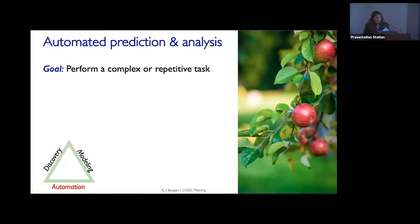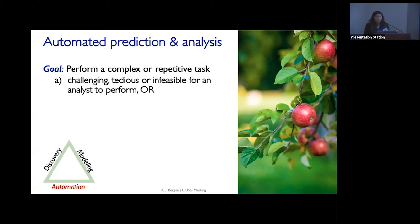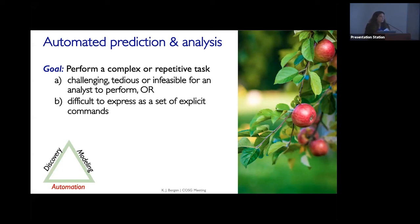The first mode is automation — automated prediction, decision making, or data analysis. The goal is to perform some sort of complex or repetitive task that could be challenging for a human to perform, or it might be infeasible to have a human perform because of the size of your data sets. Like a spam filter — a human could tell you easily if an email is spam, but it would be tedious and infeasible to have someone pre-filtering your emails. These are also tasks where people know how to do something, but it's difficult to express as explicit commands — like our example with cats and dogs.